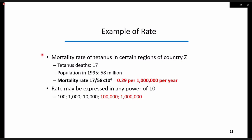Another example of rate is the mortality rate of tetanus in certain regions of country Z. In this example, there are 17 tetanus deaths in the year 1995 out of a population of 58 million. The mortality rate, therefore, is 0.29 per 1 million per year. Rate may be expressed in any power of 10, like 100, 1,000, 10,000, 100,000, or 1 million.